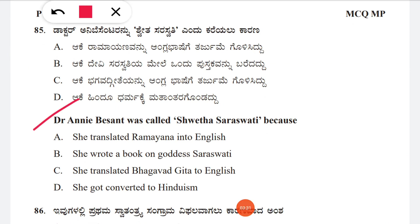Question 85: Dr. Annie Besant was called Shweta Saraswati because — option A: she translated the Ramayana into English, B: she wrote a book on goddess Saraswati, C: she translated the Bhagavad Gita into English, D: she got converted to Hinduism. The correct answer is C, she translated the Bhagavad Gita into English.